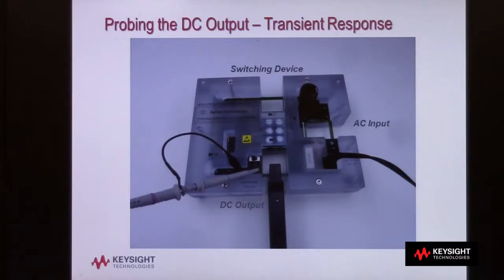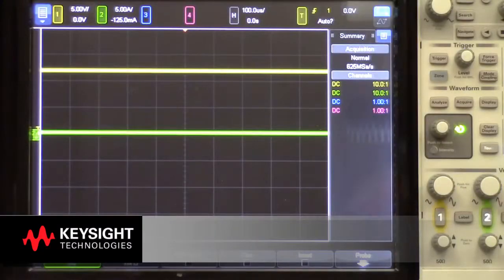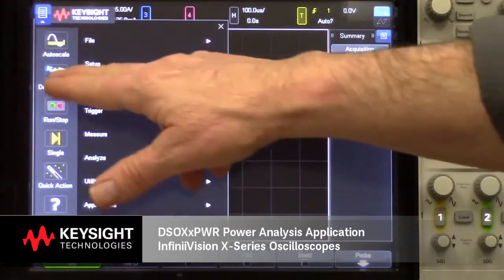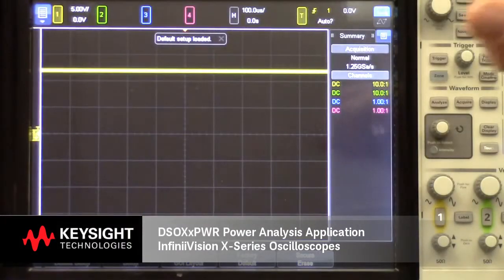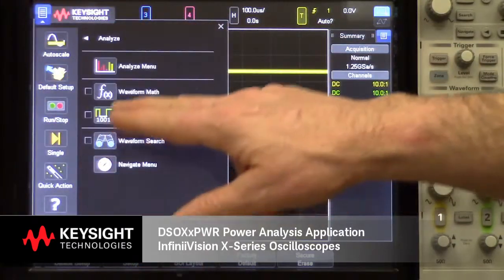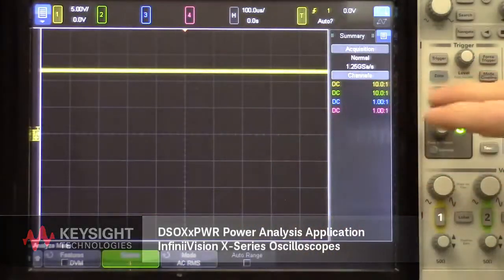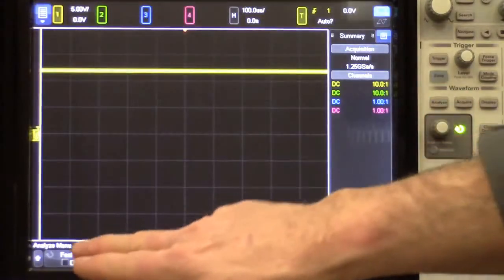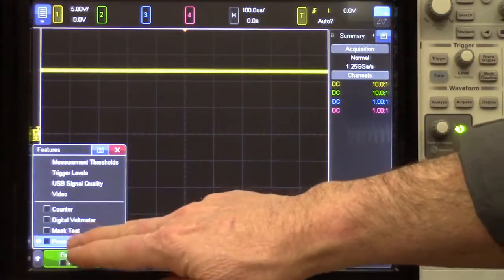Let's start making measurements. I'll begin by doing a default setup so that you can see how to do this measurement from the beginning. Then I'll go into the analyze menu, which there is a front panel key for that, and then select the power application.